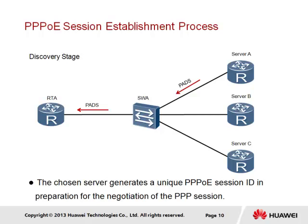The PADS is sent in response to the PADR, at which point both RTA as the client and Server A are aware of each other's Ethernet address. Following reception of the PADS packet, both will also be aware of the current PPPoE session ID. If there are no errors, RTA and the server will move into the PPPoE session stage.